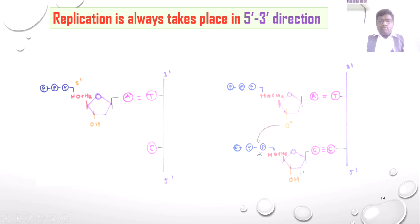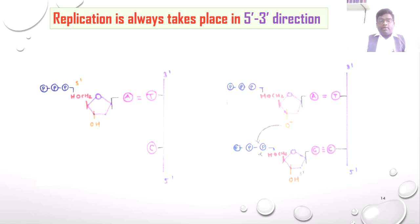When the phosphate bond is broken, energy is released and utilized for replication. After cleaving the alpha phosphate, 2 phosphate groups are released as pyrophosphate. That pyrophosphate is cleaved by the enzyme pyrophosphatase, releasing 7.2 kilocalories of energy used for the forward reaction. That is why replication always proceeds in the 5' to 3' direction — because the 3' end is always free to attach upcoming nucleotides.